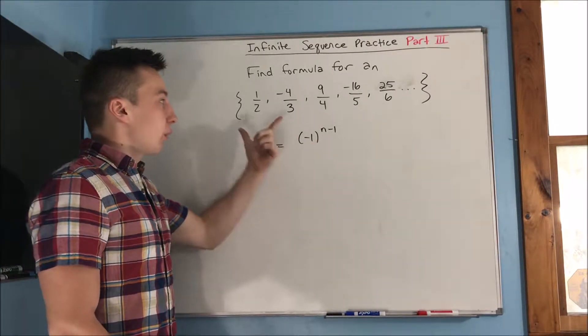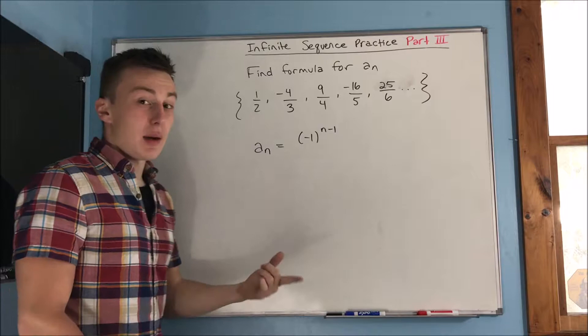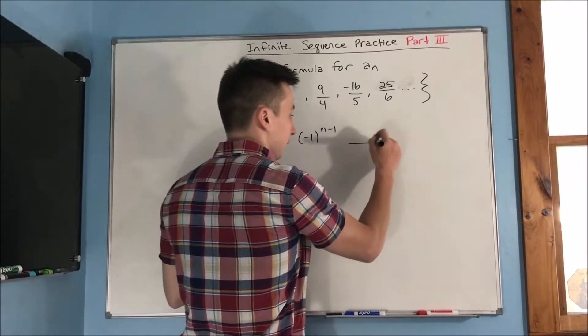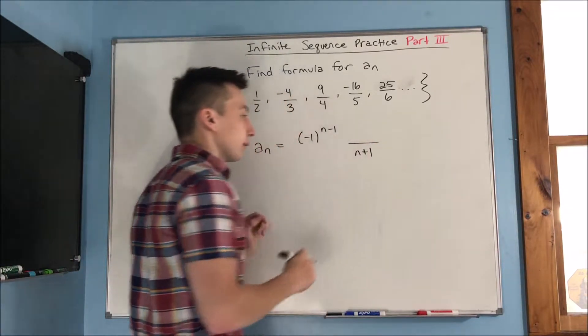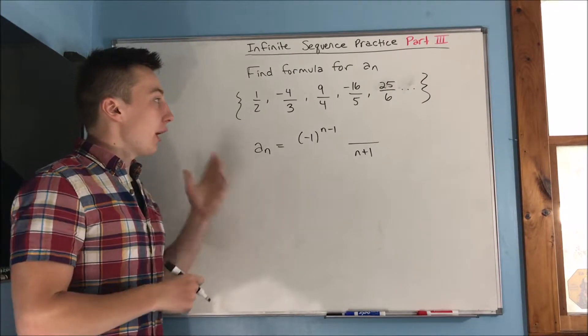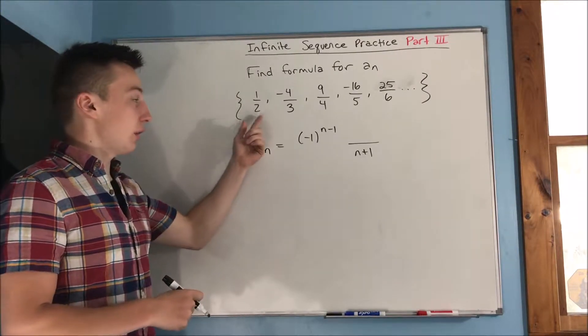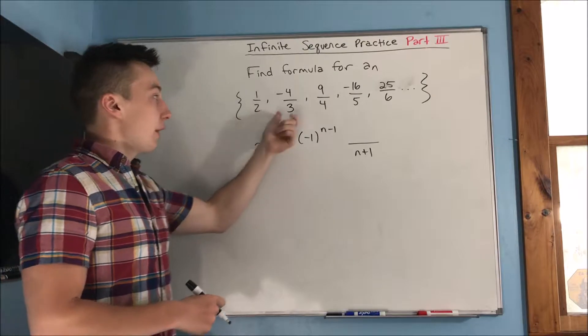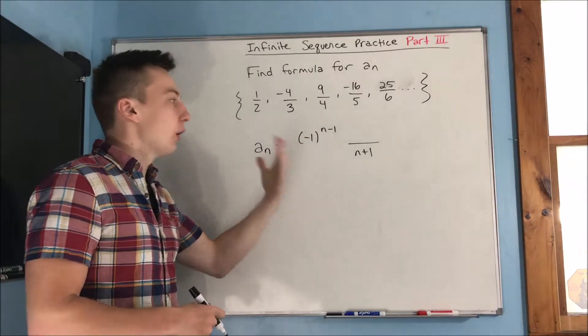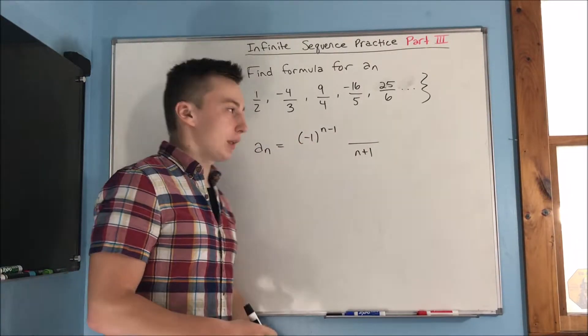Now, what is next? Well, we can at least see that the denominator is just going to be n plus one. We know that because this is the first term and it's got two as a denominator of two, then it goes up to three on our second term. So we see that it's going to be n plus one.